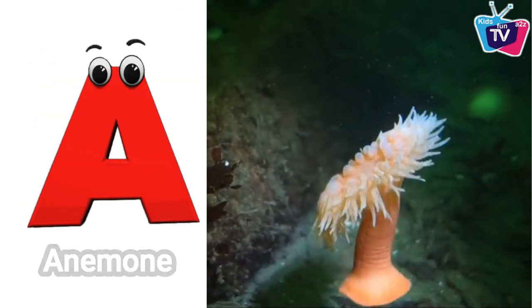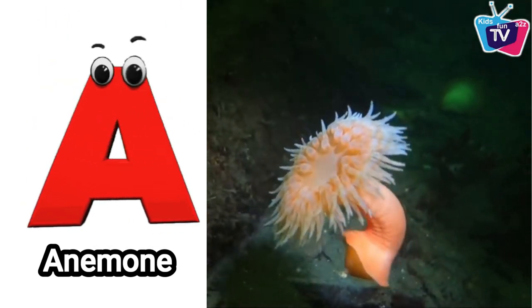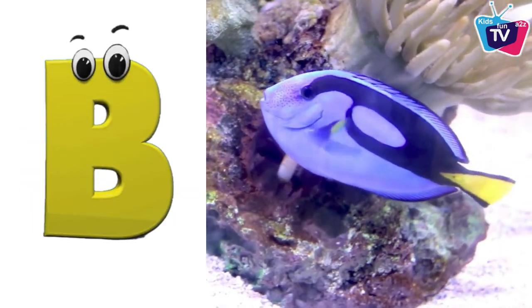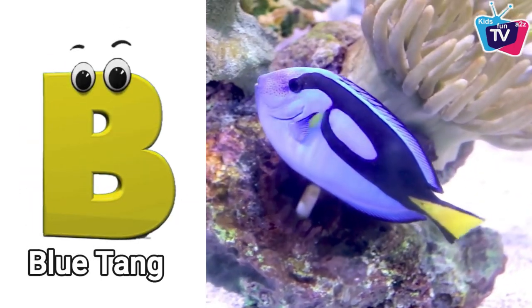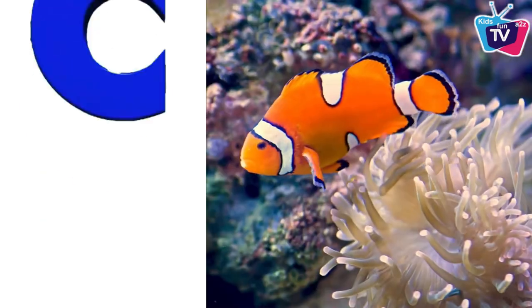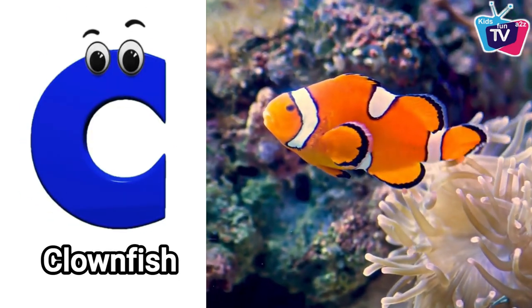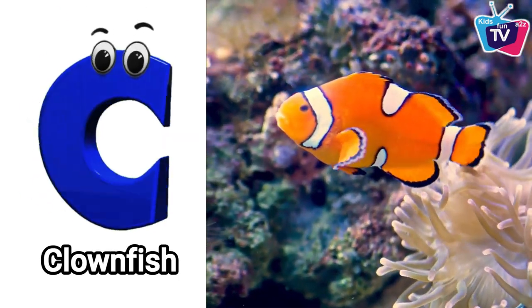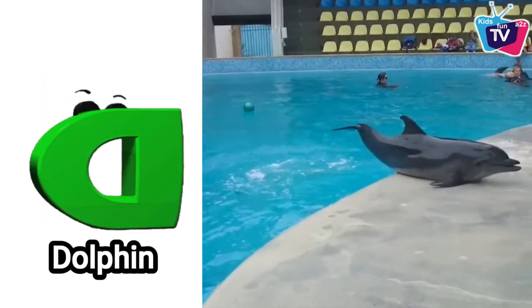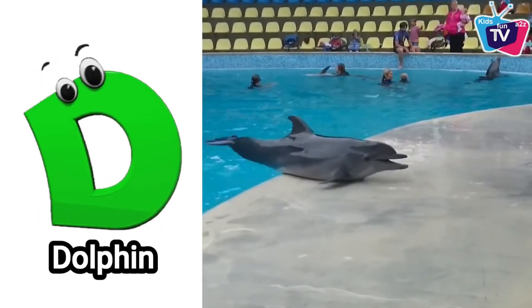A is for anemone, a, a, anemone. B is for blue tang, bu, bu, blue tang. C is for clownfish, cu, cu, clownfish. D is for dolphin, d, d, dolphin.